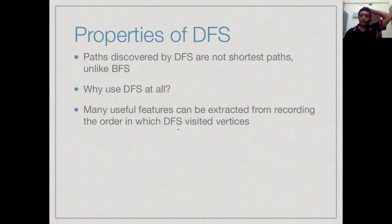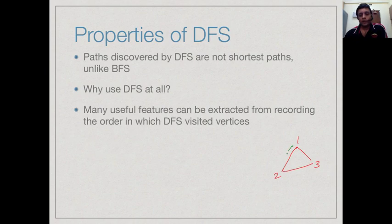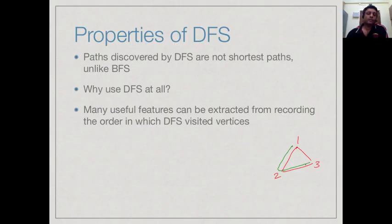One big difference between depth first search and breadth first search is that the paths DFS discovers are not shortest paths. For example, in a triangle graph with vertices 1, 2 and 3, depth first search will find a path from 1 to 3 going via 2 if we take the smallest neighbor each time. When we actually come to the direct 1-to-3 edge, we find that 3 is already visited. So it appears that depth first search may not be doing something very useful.